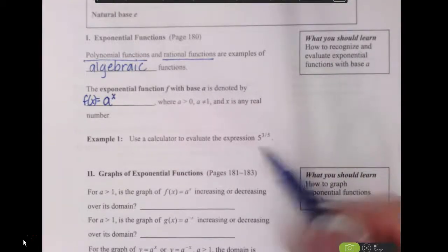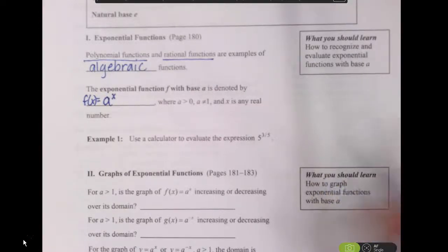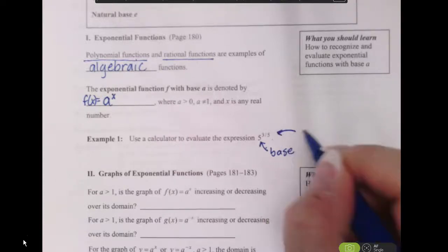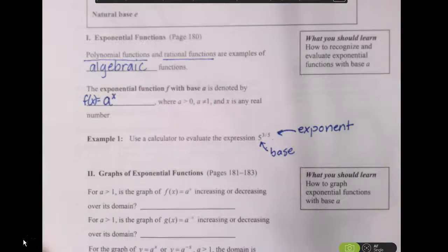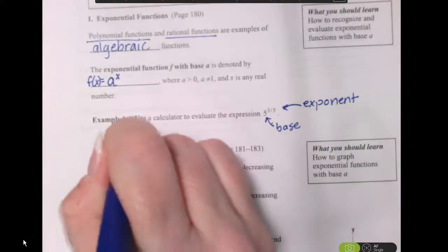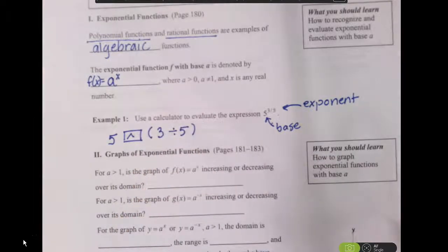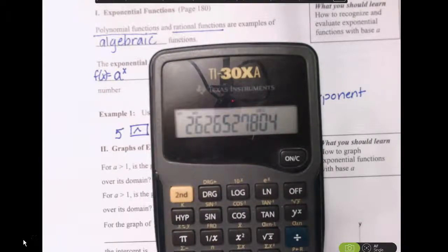For Example 1, we're going to evaluate 5 to the 3/5 power. This is exponential because we have a base of 5 and an exponent x. On your calculator, use the caret key (above the division symbol) and put fractions in parentheses. So 5^(3/5) gives a big decimal — rounding to two decimal places, that's approximately 2.63.